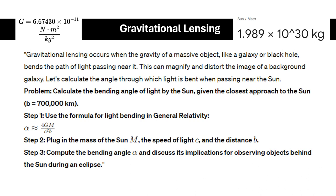We will use the formula for light bending in General Relativity: α ≈ 4GM/c²b, where M is the mass, c is the speed of light, and b is the closest approach distance.